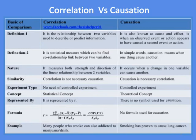The nature of correlation is that it can measure both the strength and direction of the linear relationship between two variables, while causation occurs when a change in one variable can cause another. Correlation is not necessary for causation, while causation is necessary for correlation.